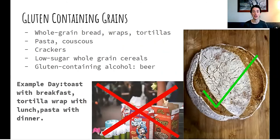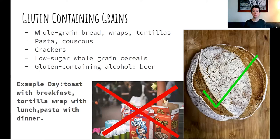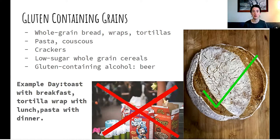Gluten-containing grains include whole grain bread, wraps, tortillas, pasta, couscous, crackers, and low-sugar whole grain cereals. Again, you want to keep it simple — if you reintroduce gluten-containing grains by eating a very sugary cereal, it won't be clear if it's something else in the cereal or the gluten that's bothering you. Whereas if it's just whole grain bread with not much else in it, it will be clear if your body doesn't like that. An example day: toast with breakfast, a tortilla wrap with lunch, pasta with dinner.